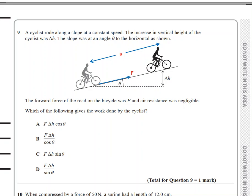Question 9 says a cyclist rode along a slope at a constant speed. The increase in vertical height of the cyclist was Δh. The slope was at the angle theta to the horizontal as shown. The forward force of the road on the bicycle was F and air resistance was negligible. Which of the following gives the work done by the cyclist? The force that the cyclist exerts is F and s is the distance traveled. Using trigonometry, you can find out s, at least an expression for s.